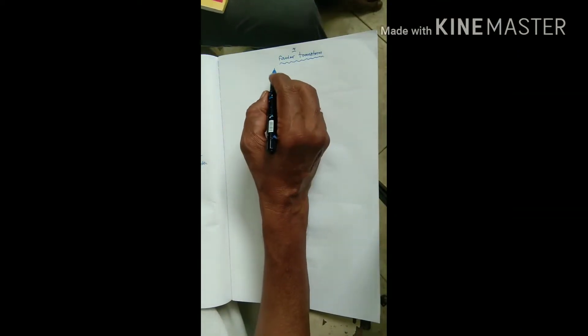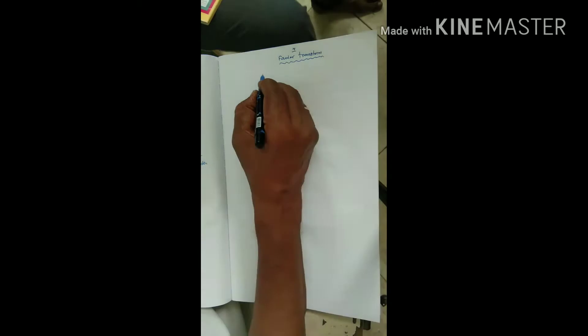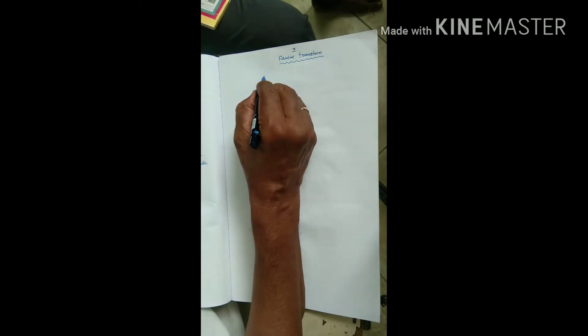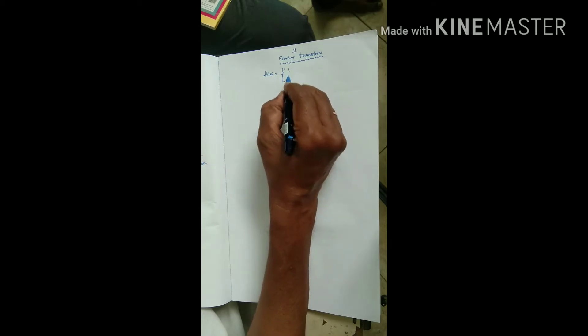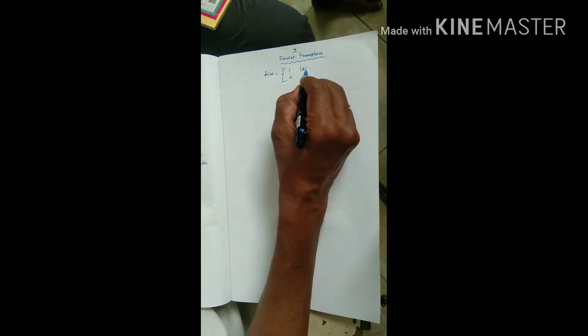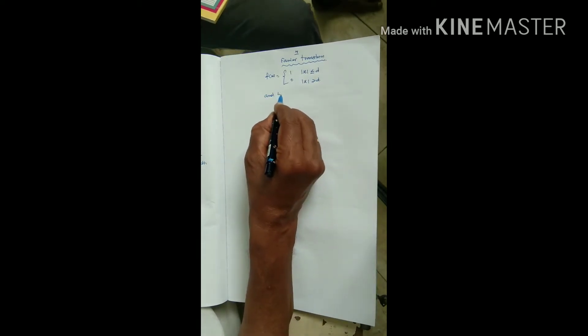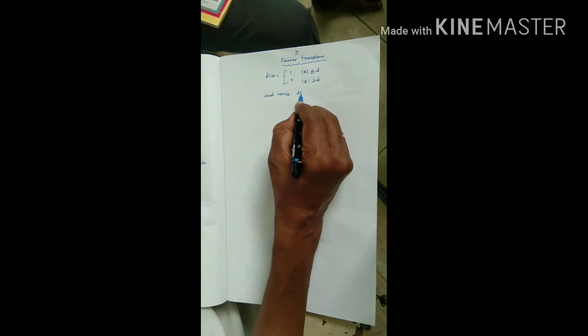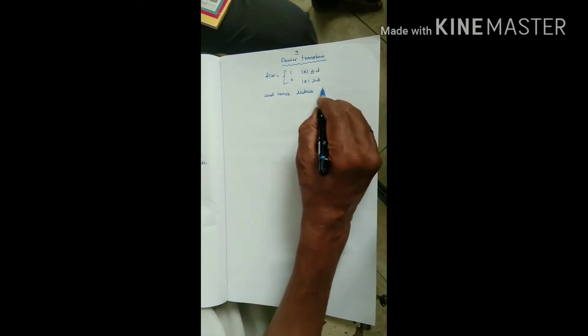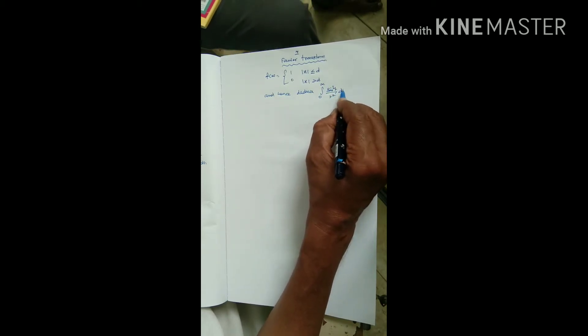This is the Fourier transform. Find the Fourier transform if f of x equals 1 for mod x less than or equal to d, 0 for mod x greater than d, and hence deduce integral 0 to infinity sin square t by t square dt.